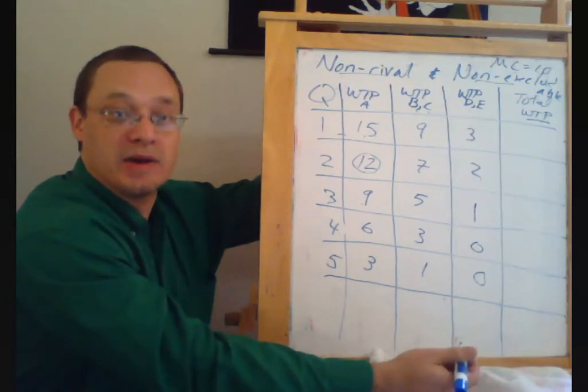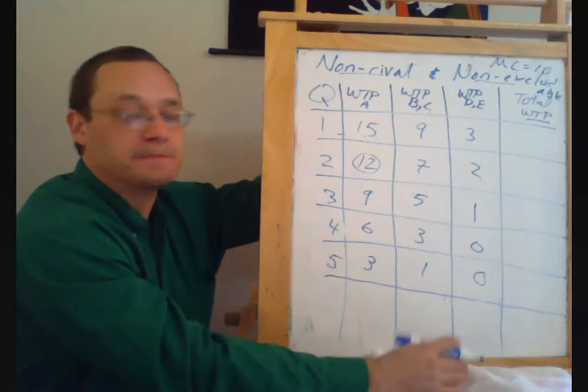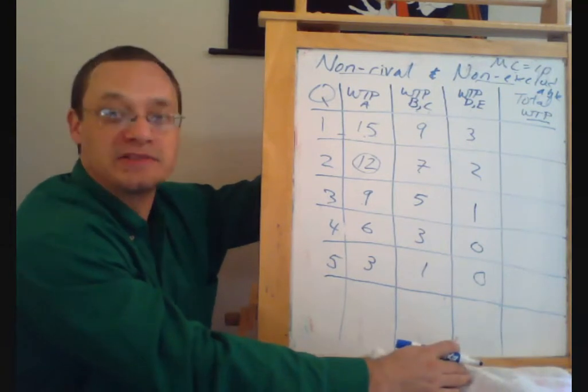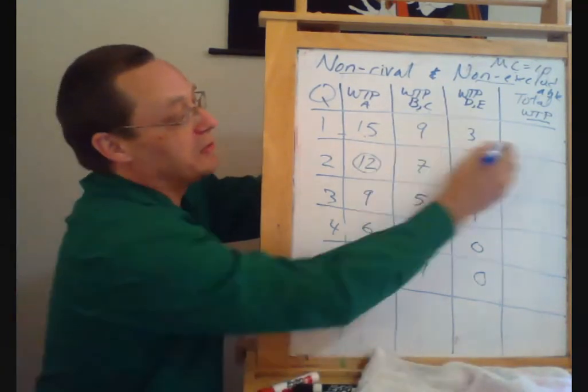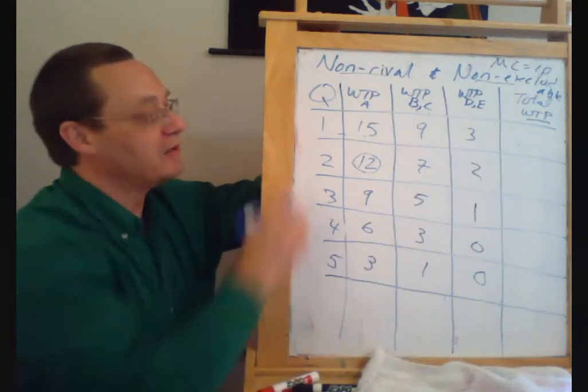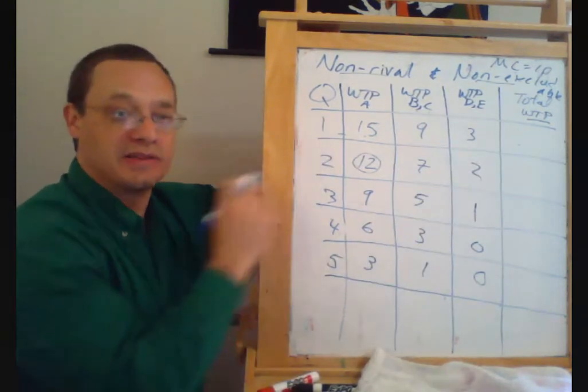Then the question arises, what's the efficient quantity? And to figure out the efficient quantity, we need to figure out what the total willingness to pay for the first street light is, and the second street light, and so on and so forth.